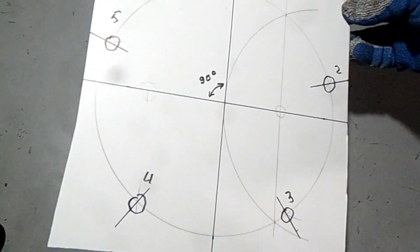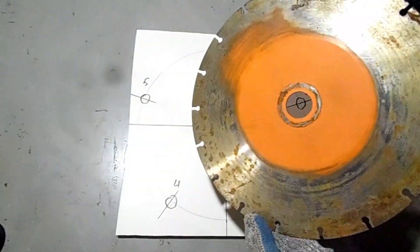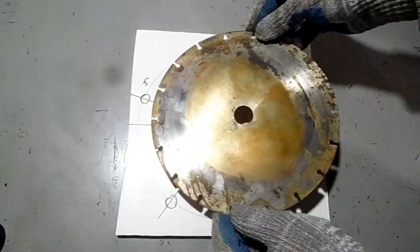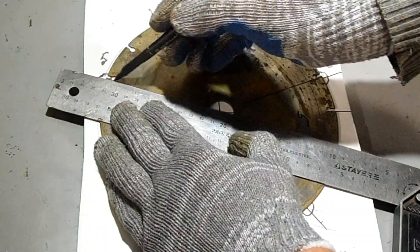Well friends, everything is ready. I managed to divide the disc into 5 equal parts and now I will put a disc from an angle grinder on this template and make marks on it. This way, I managed to mark the disc into 5 equal parts.